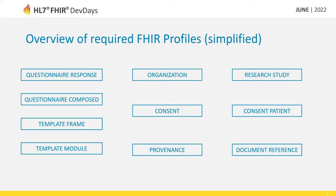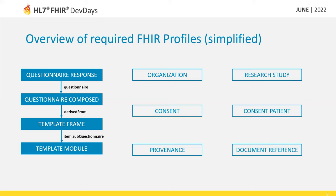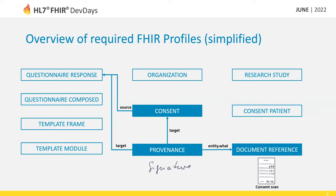In total, we specified 10 profiles, 9 extensions, 3 value sets, and 2 code systems with FHIR to cover all necessary aspects for maximum interoperability of existing technical concepts. The questionnaire response references a renderable consent template — the questionnaire composed — which is derived from a versioned consent template frame including several template modules as sub-questionnaires. Based on the accepted and declined consent modules specified in the questionnaire response, the automatically processable FHIR consent resource is generated. Electronic signatures of the patient or educating persons can be depicted using provenance resources.